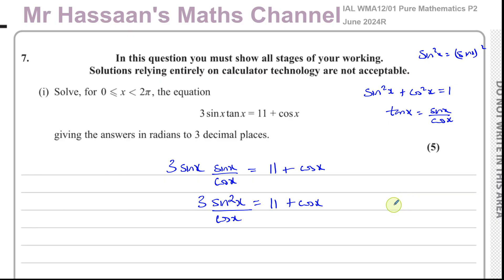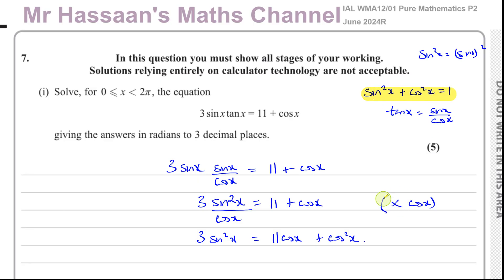The next thing we can do is multiply both sides by cosine x to get rid of the fraction. That gives us three sine squared x equals 11 cosine x plus cosine squared x. Now we can think about the Pythagorean identity. We've got sine squared x, cosine squared x, and cosine x. I can write cosine squared x as one minus sine squared x, or sine squared x as one minus cosine squared x.